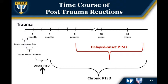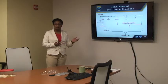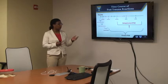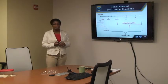Then we have acute PTSD, which means a PTSD response between 30 days and about 3 months. If we're looking at a chronic PTSD sample, that's going to last between 3 months and possibly many, many years. And then we have delayed onset PTSD, usually characterized in military populations, where people may have 6 months post-trauma or many more before they display any symptoms of PTSD.